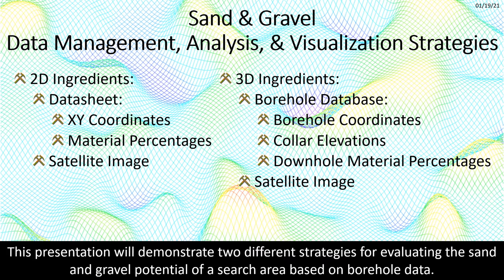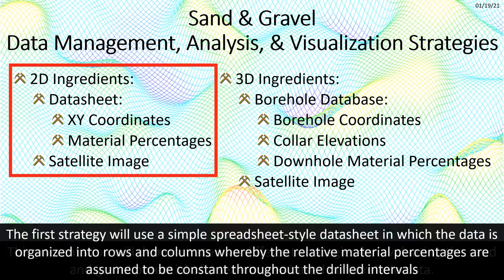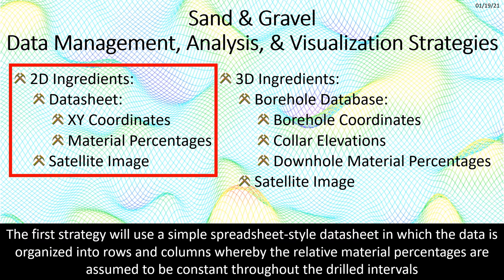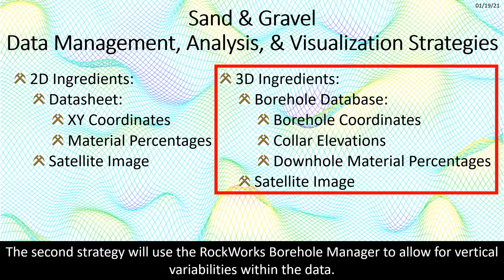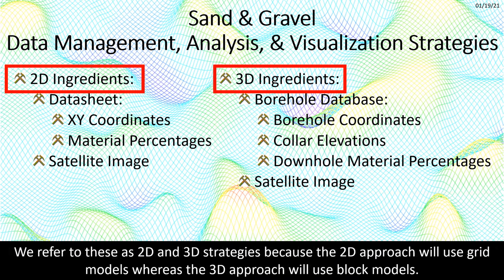This presentation will demonstrate two different strategies for evaluating the sand and gravel potential of a search area based on borehole data. The first strategy will use a simple spreadsheet-style data sheet in which the data is organized into rows and columns, whereby the relative material percentages are assumed to be constant throughout the drilled intervals. The second strategy will use the Rockworks Borehole Manager to allow for vertical variabilities within the data. We refer to these as 2D and 3D strategies because the 2D approach will use grid models, whereas the 3D approach will use block models.